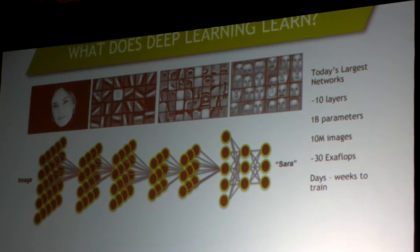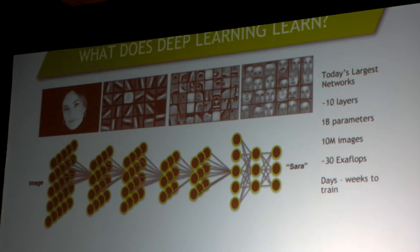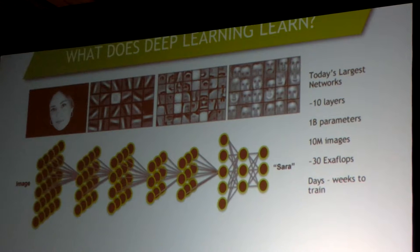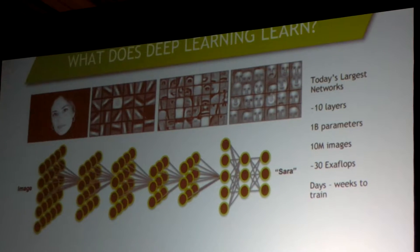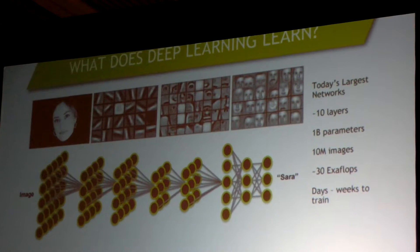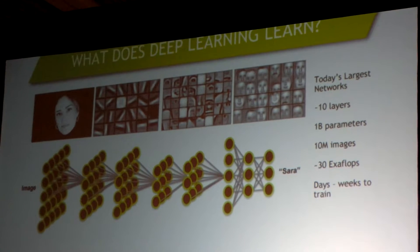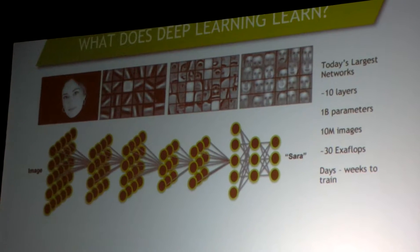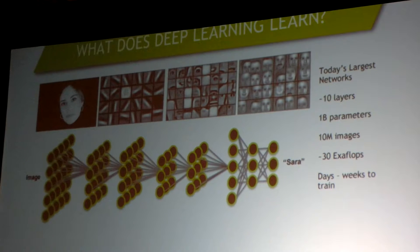This is a network trained on faces. Whenever you train a convolutional neural image network on any objects, the first layer in this network — these are weights and biases — you're basically training the numerical weights of these sets of connections. The first layer of images are these filters to the right of the woman's face.